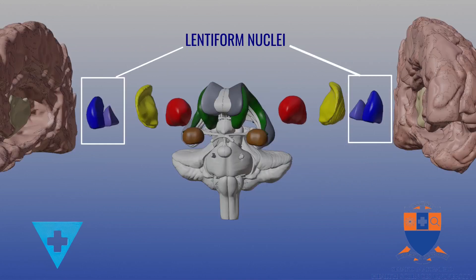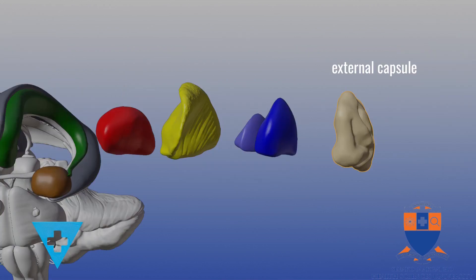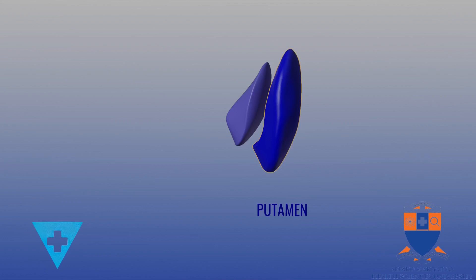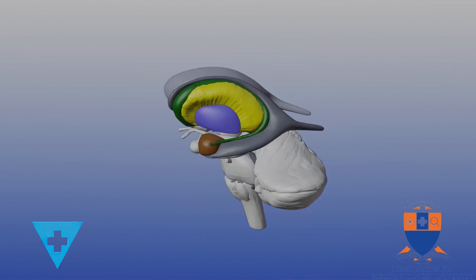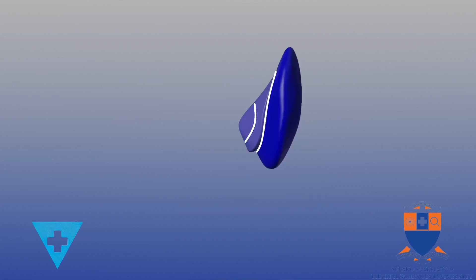Next up is the lentiform nucleus. This lens-shaped nucleus is between the external and the internal capsules. It has two parts, the outer putamen and the medially located globus pallidus. Globus meaning sphere or ball, pallidum meaning pale, thus describing a pale ball. The external pallidal lamina divides the putamen and the globus pallidus. The internal pallidal lamina divides it into the external and the internal globus pallidus.